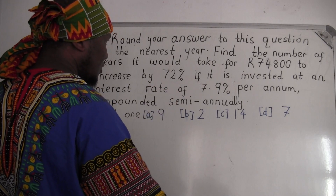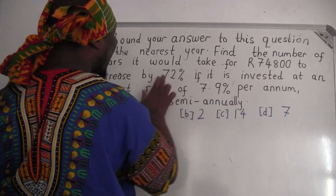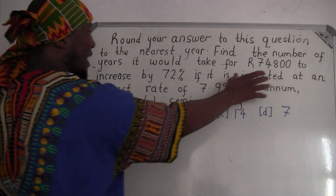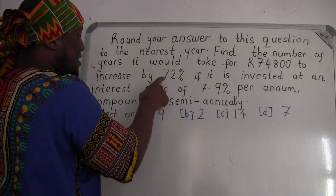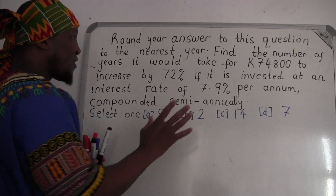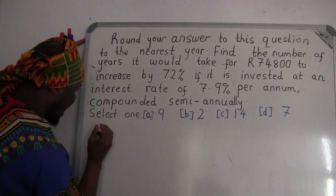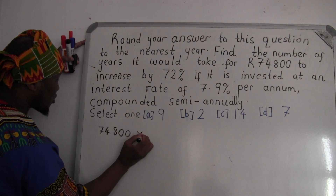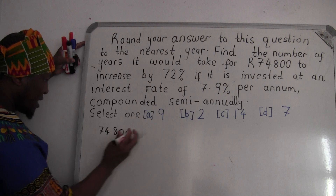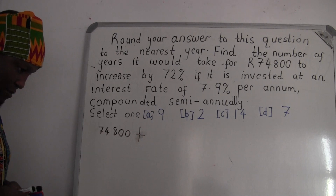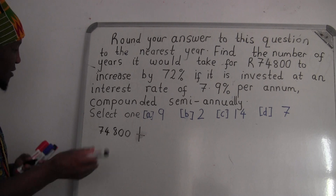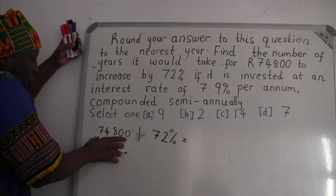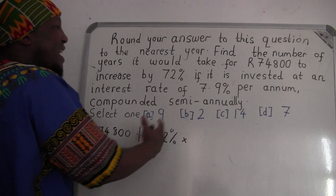Before we go further, we want to get the number of years it will take this amount to increase by 72%. We're going to have this number as a principal amount, and then it's going to increase by 72%. So let's find what that increase by 72% means — 'increase by' means this amount is going to increase by 72% of the original amount, and then it's going to give us the new amount.